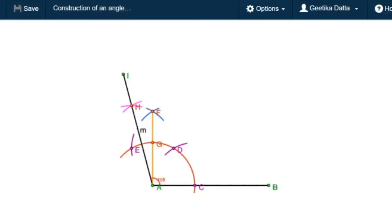We already know how to construct angles of 90 and 120 degrees. So using these two angles I will be making an angle of 105 degrees. Let us see the steps of construction.